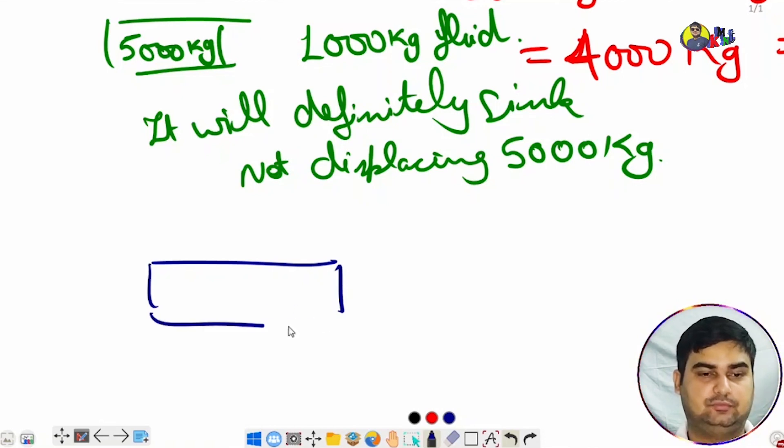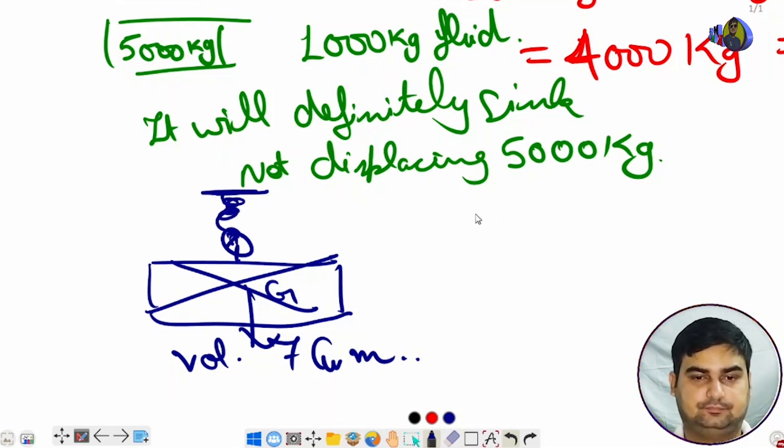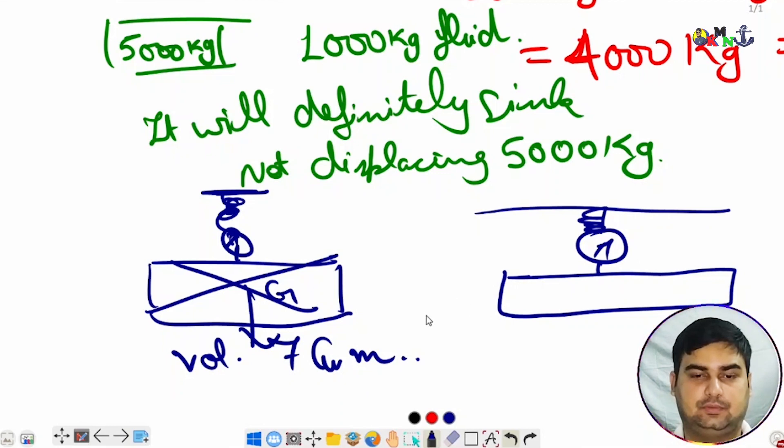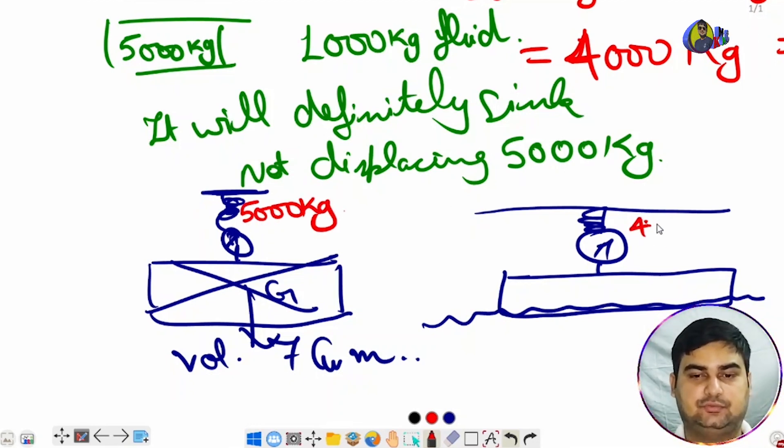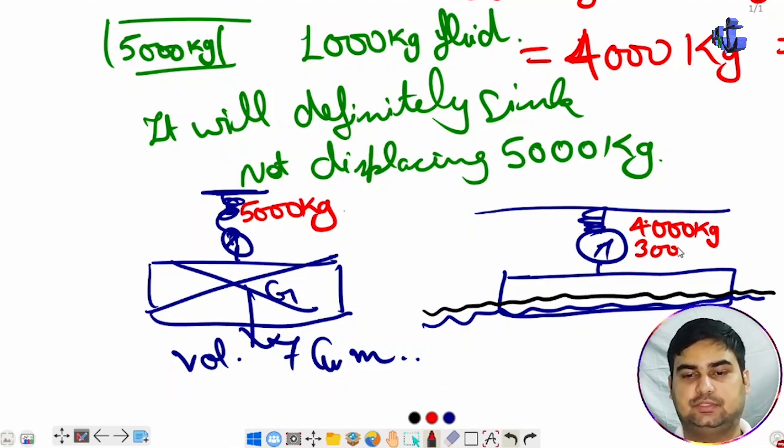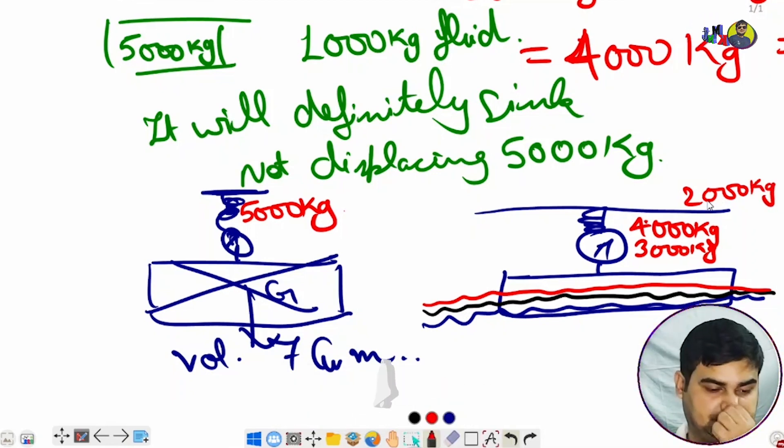There is a second example. A spring balance is attached. When we slowly immerse this block, the weight was initially 5000 kgs. As we immerse it, it reduces to 4000 kgs, then further to 3000 kgs, then to 2000 kgs.